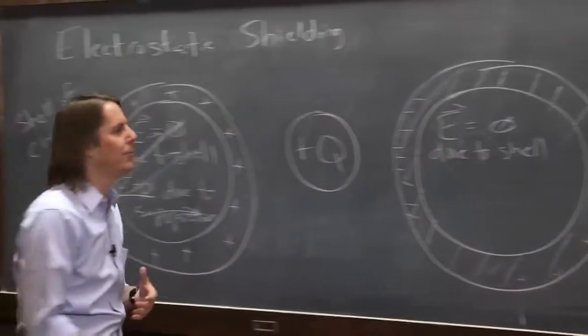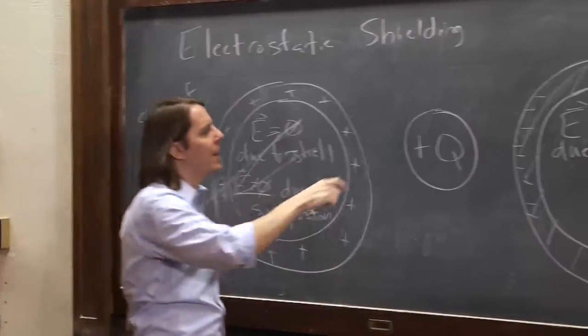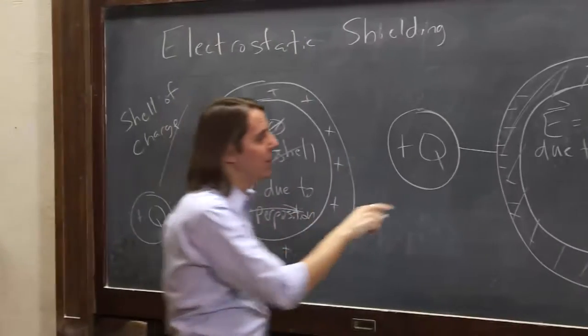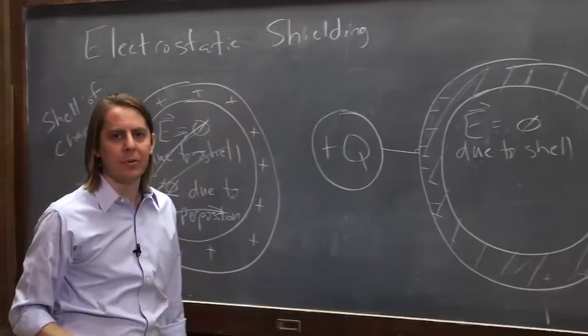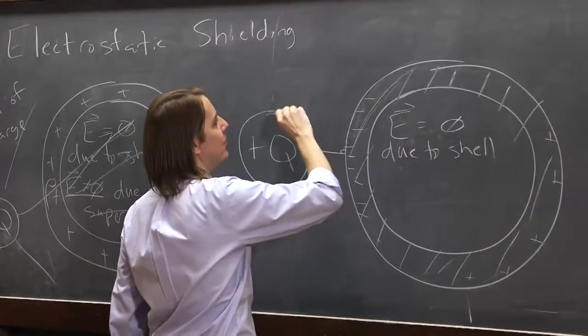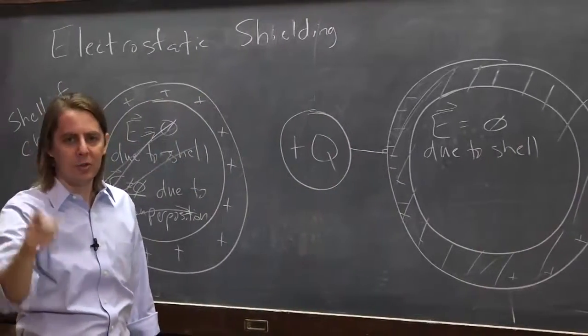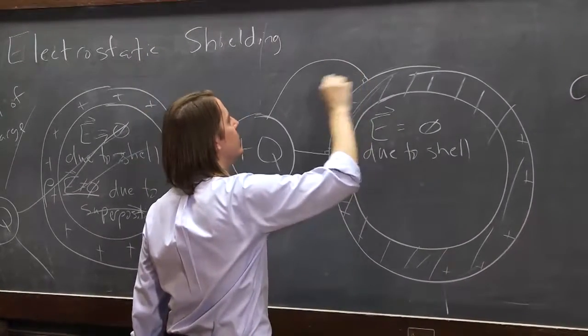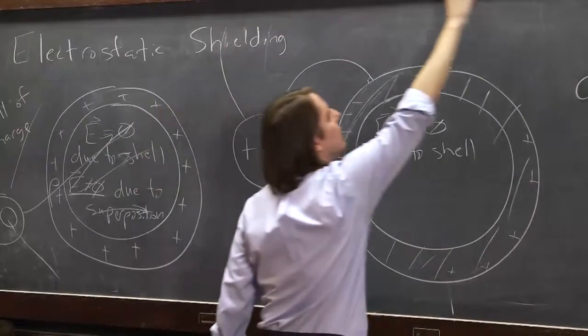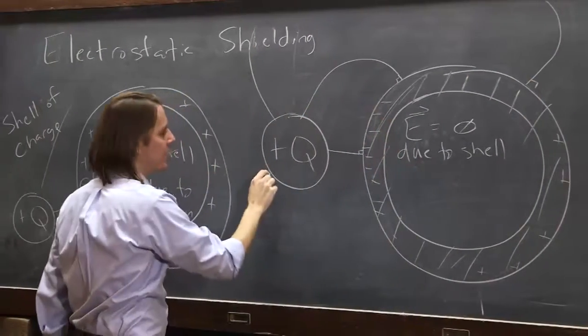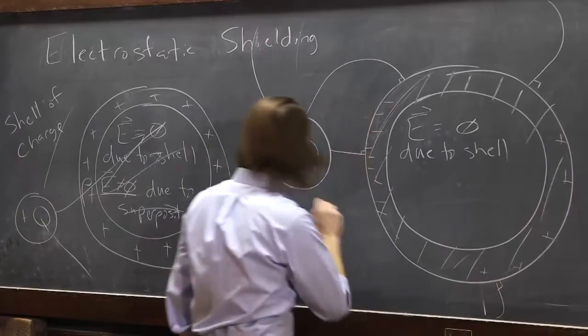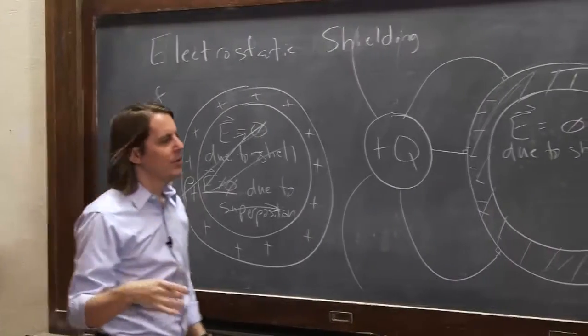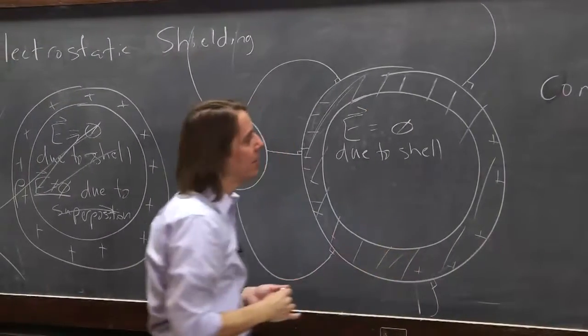So what it'll do is it'll warp the field lines. Instead of having them sort of bend around and go through, every field line that approaches the metal surface will end perpendicular to the surface. That basically means the field line is terminating. Field lines always start on a charge and they always terminate on a charge. So this metal shell is going to throw up a charge distribution to terminate all of the field lines right on its surface. One will come out and probably go right there. One might come out and do like this.